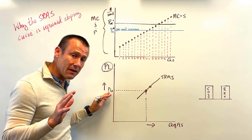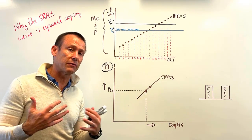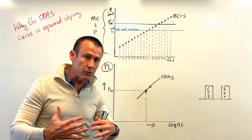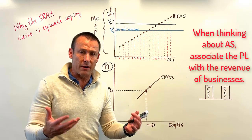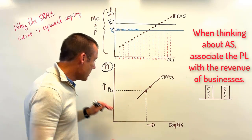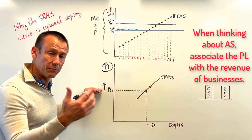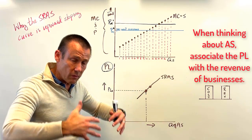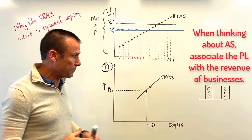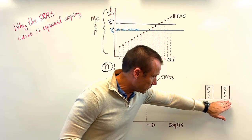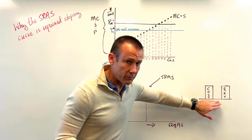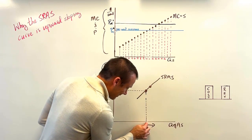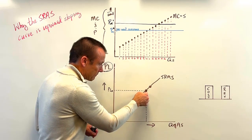Now, the price level is the level of prices of all final goods and services. When that price level goes up, revenues to businesses are going up — that's what's happening. Looking at this visual: at the original price level, for these last goods being produced, revenue kind of equals cost. All the goods before that had revenues exceeding cost, with the difference shrinking until we reach those last goods.